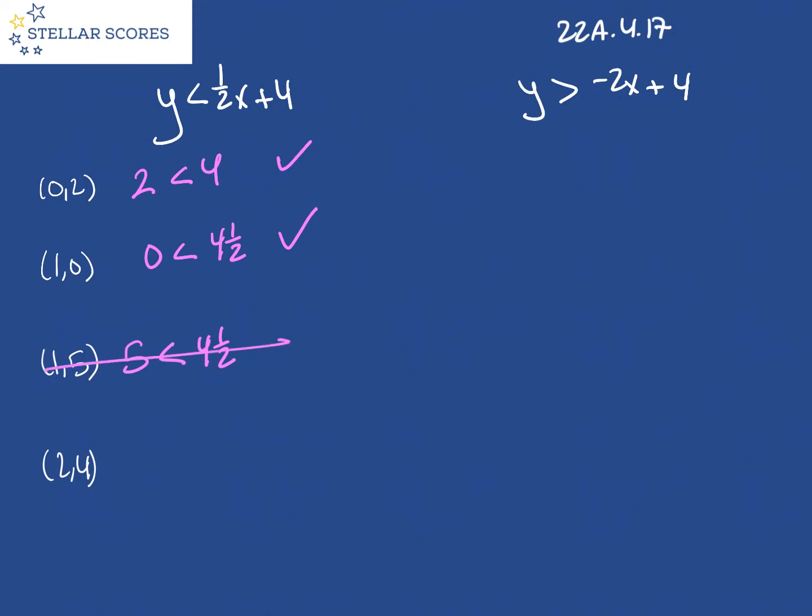And then let's look at two and four. So then four is less than one half times two is one, plus four is five. Four is less than five. Okay, that one's true. So we've got three possibilities. Now let's try this second equation and see what we get.